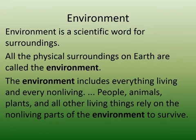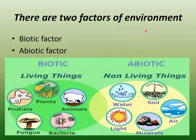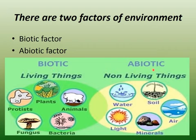Now there are two factors of the environment. Number one is the biotic factor, and the other is abiotic factors. Biotic factors are the living things, and abiotic factors are the non-living things. So basically the environment consists of these two basic factors: the biotic and abiotic factors.